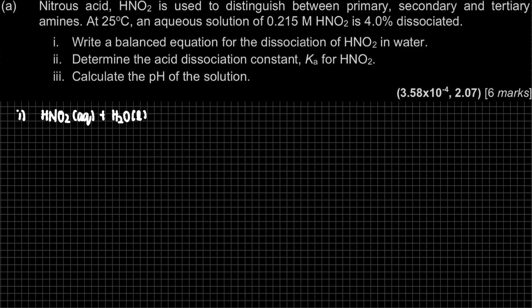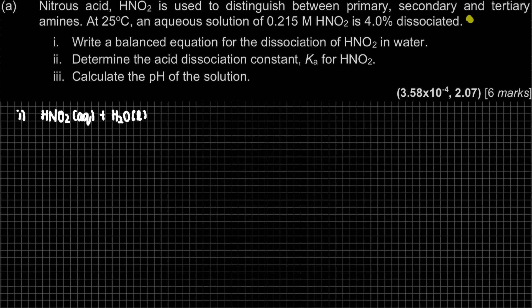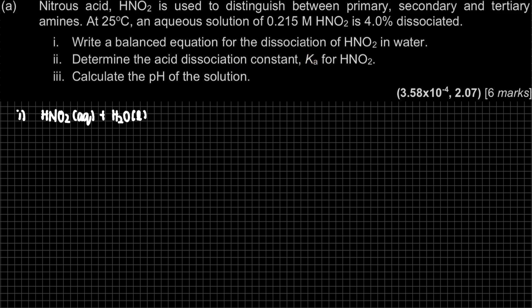When talking about chapter 7, we have strong acid or weak acid, same goes for bases. If it's a strong acid, it dissociates fully and we use a single arrow. If it's a weak acid, it dissociates partially and we use a reversible arrow. From the question, part ii asks to determine the acid dissociation constant Ka, which means this must be a weak acid — so we use a reversible arrow here.